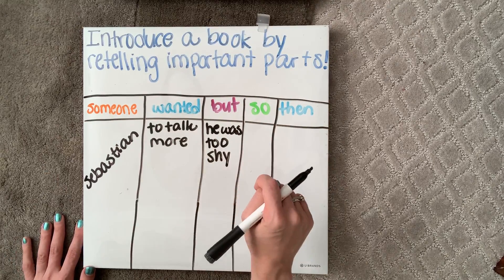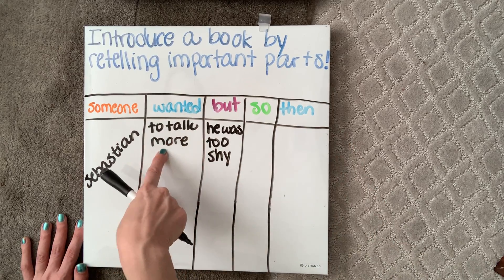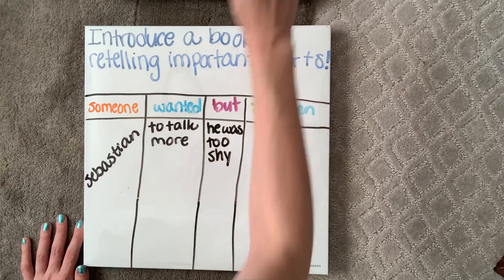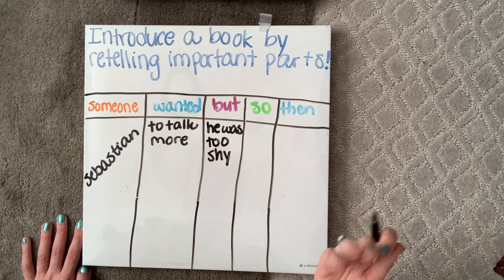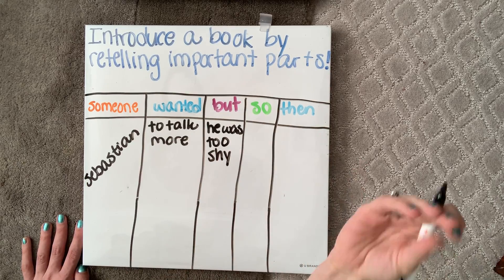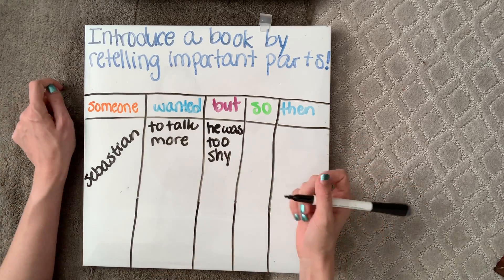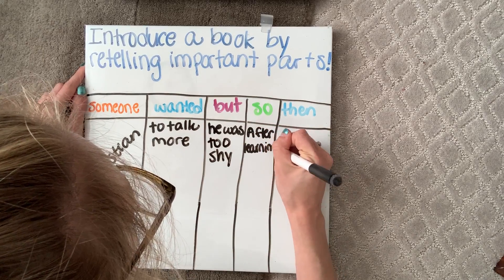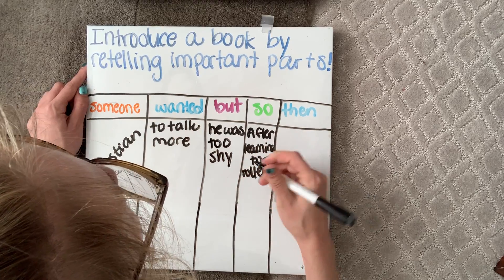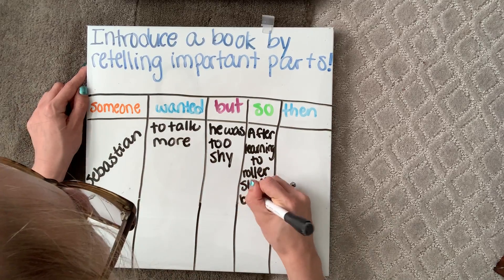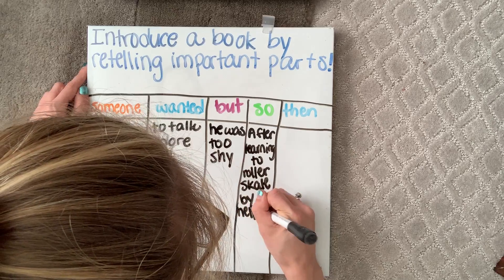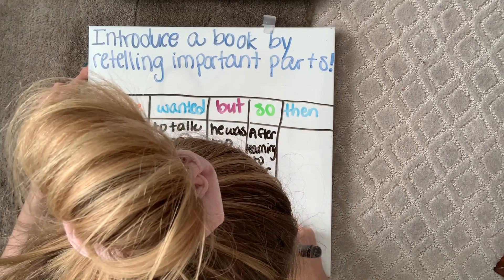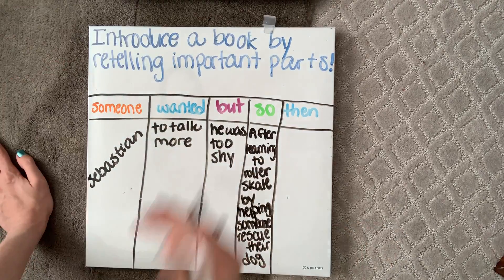All right, next is our so. This is how the character will solve the problem. So to get what they want, they've got this problem in their way — so what are they going to do to solve it? In our book's case, Sebastian was learning to roller skate and by helping someone rescue their dog. So that's what he did to get over his shyness. After learning — so that's what happened to help us solve the problem.